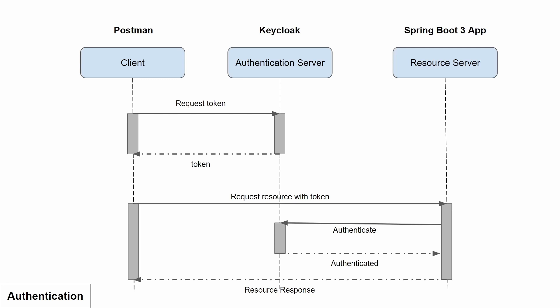In this video we'll see a detailed explanation about the authentication process using a Spring Boot application. We have a client, an authentication server, and a resource server. The client being used is Postman, the authentication server is Keycloak, and the resource server is a Spring Boot application.